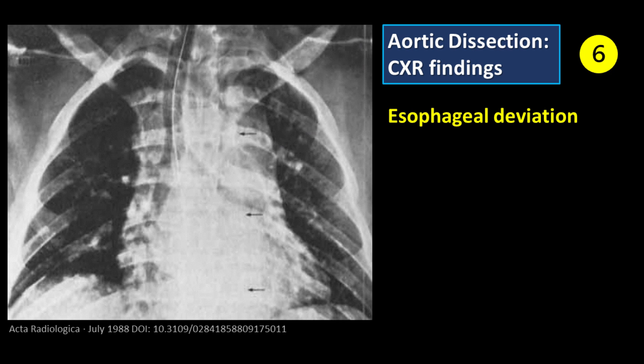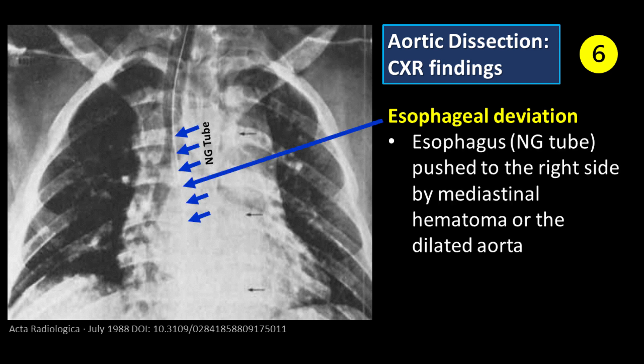Feature number 6: Esophageal or NG tube deviation. The esophagus or NG tube may be pushed to the right side by mediastinal hematoma or the dilated aorta.